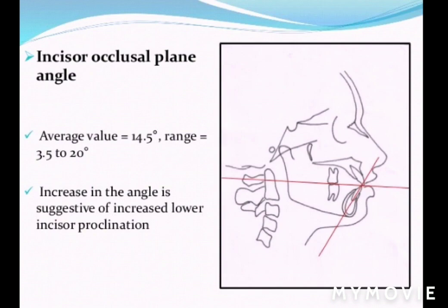Next is the incisor-occlusal plane angle — the angle the lower incisors make with the bisected occlusal plane of molars and incisors. An increase in this angle is suggestive of increased lower incisor proclination. The average value is 14.5 degrees, ranging from 3.5 to 20 degrees.